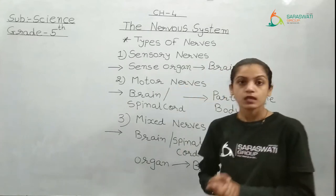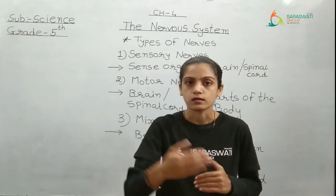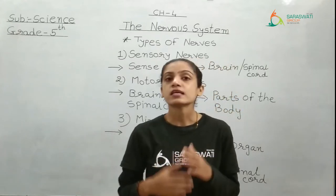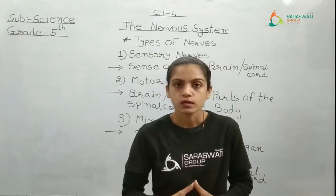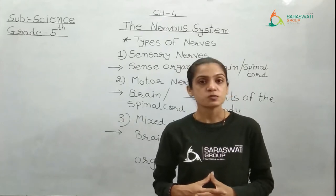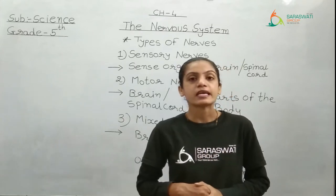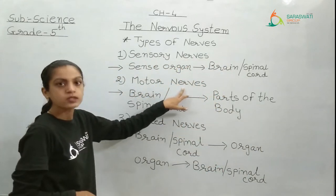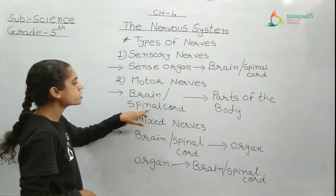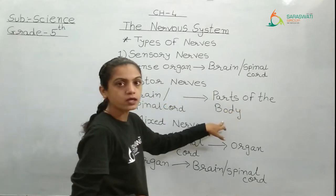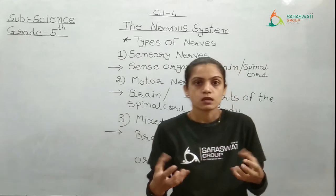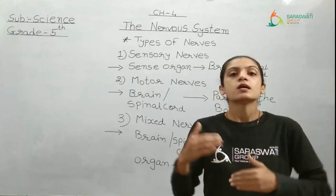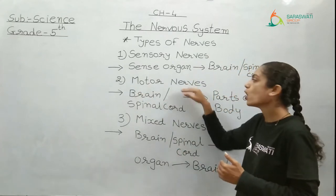When we pass a message to someone, we also expect a reply. So when the sense organs pass messages to the brain or spinal cord, they also want a reply. The nerves that carry the reply are motor nerves, which take the message from brain or spinal cord to different parts of the body — it may be muscles, tissue, or an organ. Nerves carrying messages from brain or spinal cord are known as motor nerves.